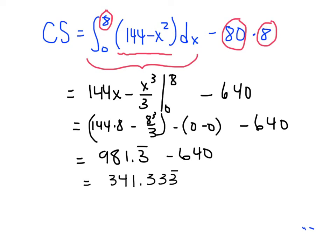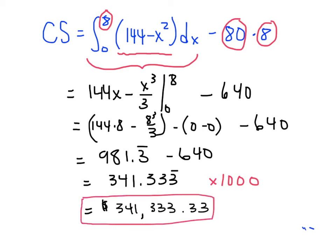That's 981.3 repeating. When I subtract 640, I end up with 341.3 repeating. Now remember we have to multiply this by 1000 because our value is in units of 1000, our quantity x. When we do that, we get a consumer surplus of $341,333.33. The consumer surplus works out to be $341,333.